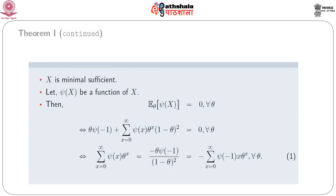Clearly X is minimal sufficient. Let ψ(x) be any real-valued function of x. Then E[ψ(X)] = 0 for all θ implies θ·ψ(−1) + Σ_{x=0}^∞ ψ(x)·θ^x·(1−θ)² = 0 for all θ. This implies Σ_x ψ(x)·θ^x = −θ·ψ(−1) / (1−θ)². If we expand (1−θ)² in a power series, then after some algebraic manipulations we get −Σ_{x=0}^∞ ψ(−1)·x·θ^x for all θ.